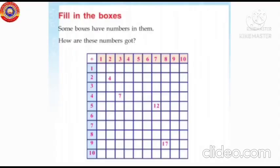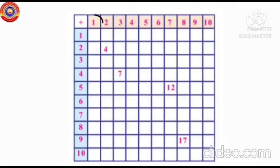First one, filling the boxes. In the first column, numbers from 1 to 10 are given. Likewise, in the first row also, numbers from 1 to 10 are given. Some numbers in the grid are already filled by adding the corresponding numbers taken from first row and first column.